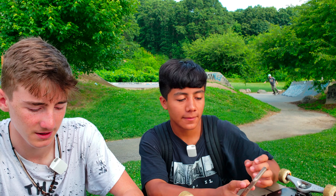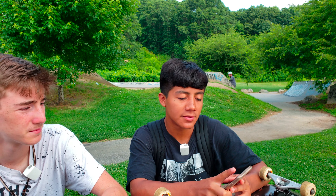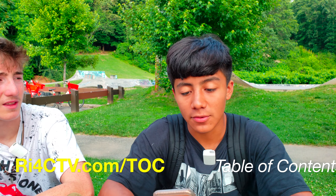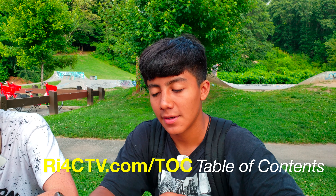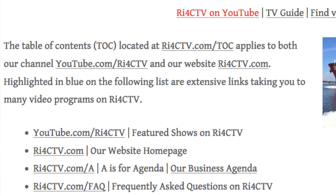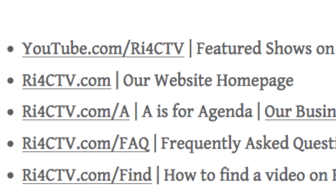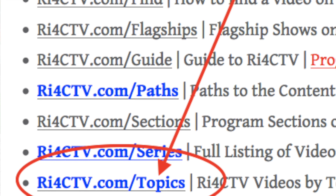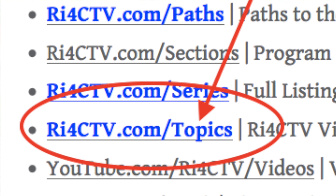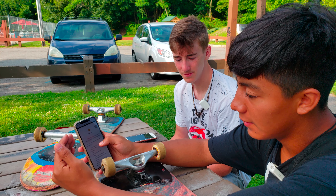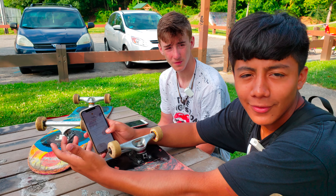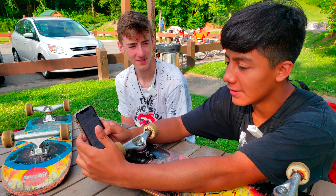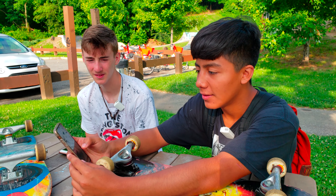It's kind of like a shortcut to get to the table of contents if you're interested in looking at that. You go to ri4ctv.com/TOC, so table of contents. And then here you can see the list — the table of contents that Turner was just talking about. And if you keep going down, highlighted in blue, ri4ctv.com/topics. And this is where all the topics are, so you can check out whatever you're interested in — animals, events. It's a pretty good list.